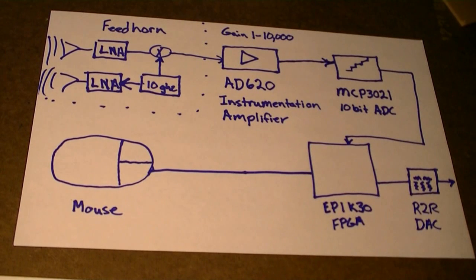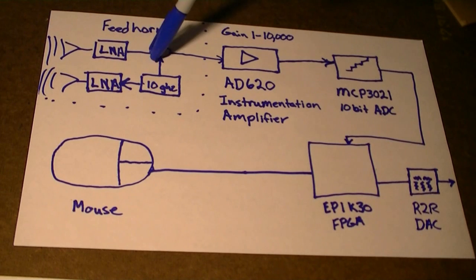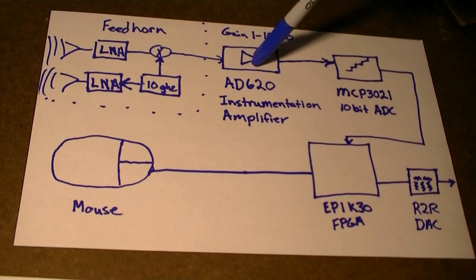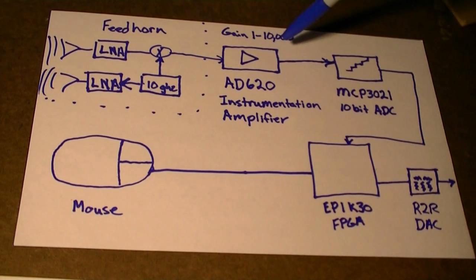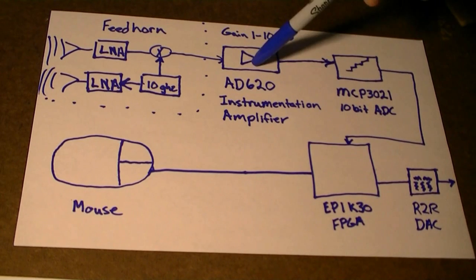Let's look at the system diagram. So we have the feed horn with the low noise amplifier and our reversed amplifier transmitting. It's received and mixed, and then it goes to an instrumentation amplifier by Analog Devices. This device replaces about three op amps, and it has a gain of 1 to 10,000, which is very handy.